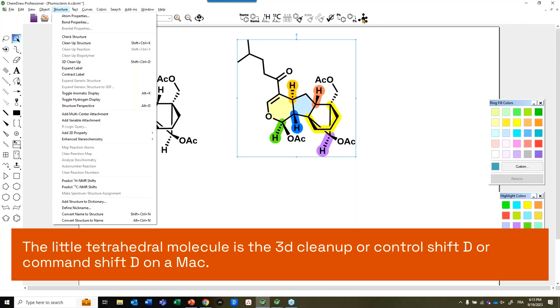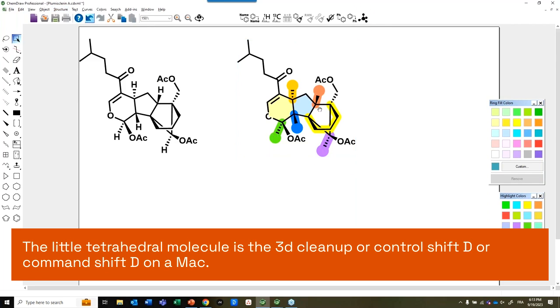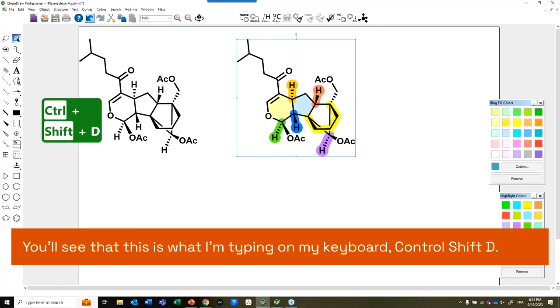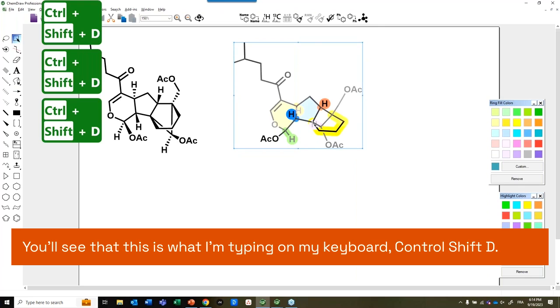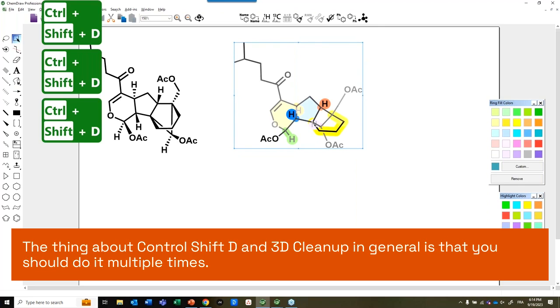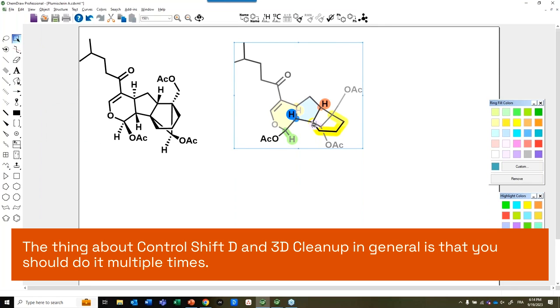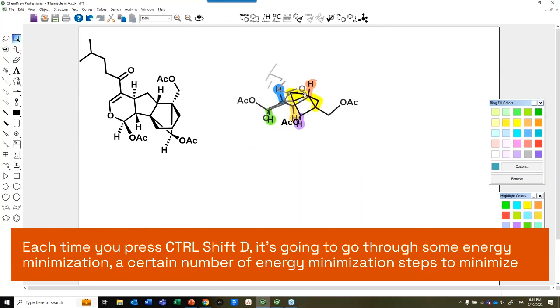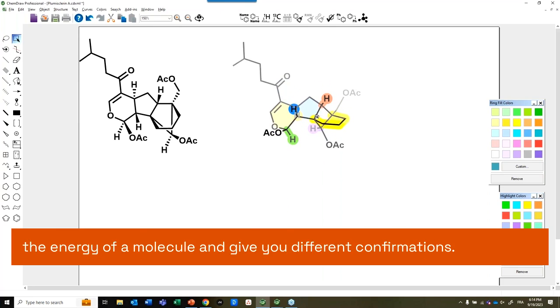It's available under this icon right here, the little tetrahedral molecule is the 3D cleanup or Control-Shift-D or Command-Shift-D on a Mac. You'll see that this is what I'm tapping on my keyboard, Control-Shift-D. The thing about Control-Shift-D and 3D cleanup in general is that you should do it multiple times. Each time you press Control-Shift-D, it's going to go through some energy minimization, a certain number of energy minimization steps to minimize the energy of the molecule and give you different confirmations.